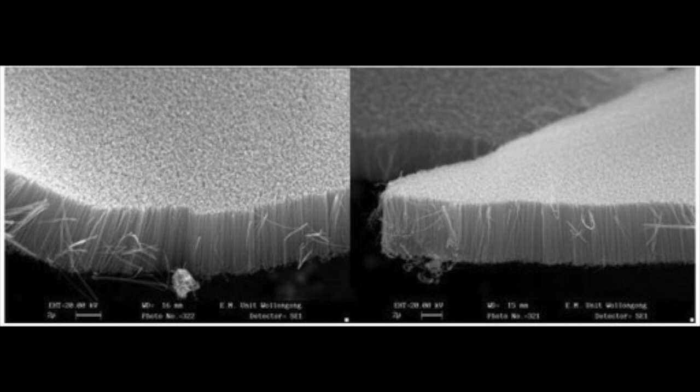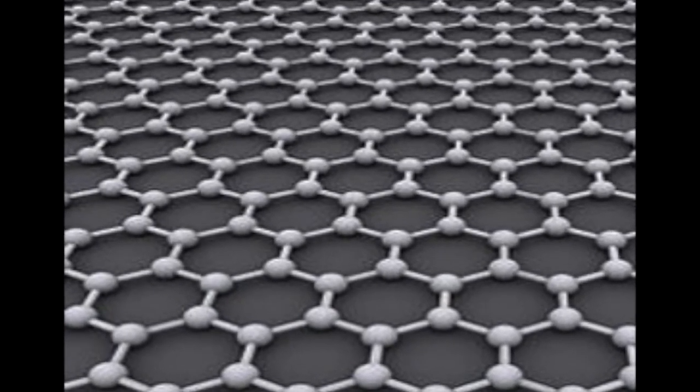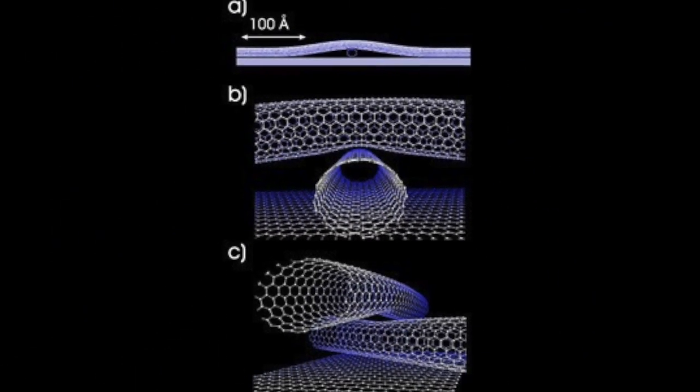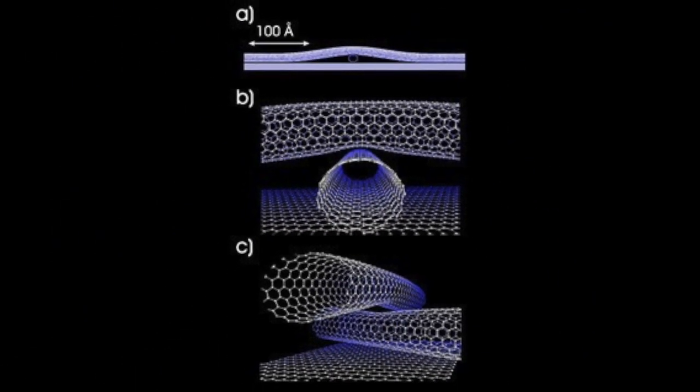Based on how the nanotubes are produced, defects and inconsistencies may result, which limit thermal conduction and energy efficiency. The structure of the carbon nanotubes can be visualized by imagining graphene sheets rolled into hollow cylinders 2,000 times thinner than human hair. As we know, this is not how carbon nanotubes are actually produced.